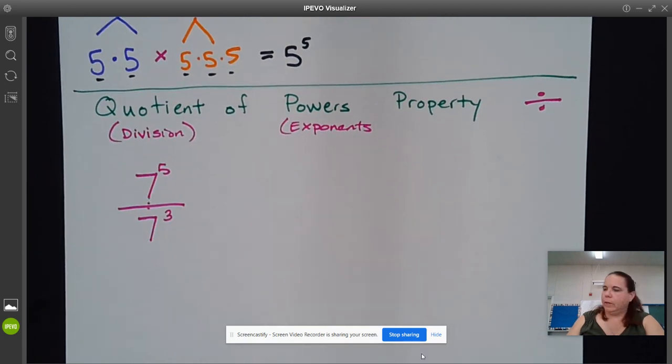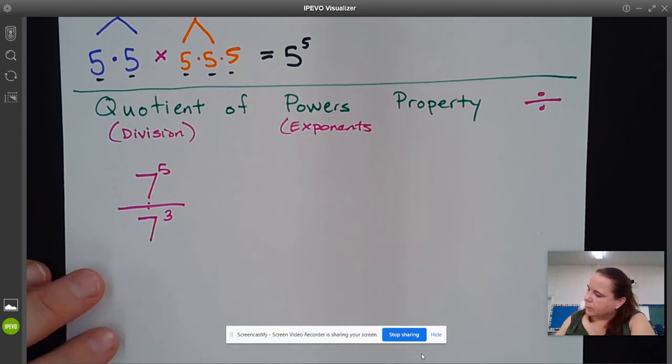When we have the quotient of powers property, we want to take these values and expand them out. That helps us see where the rule comes from.